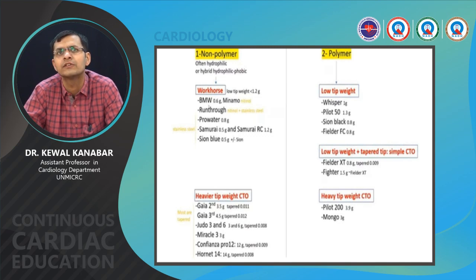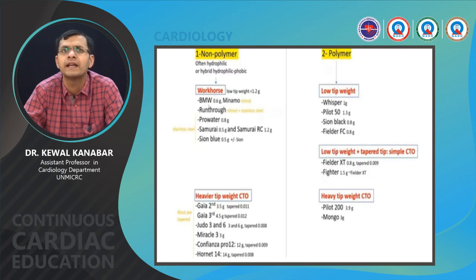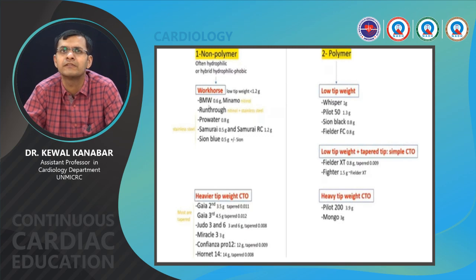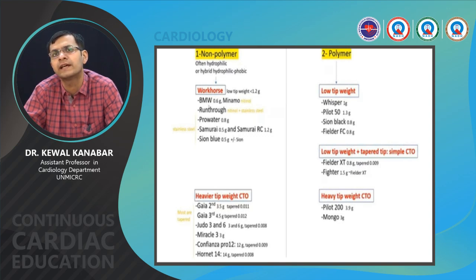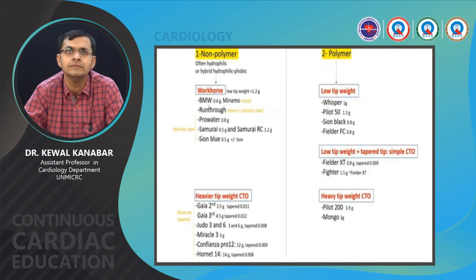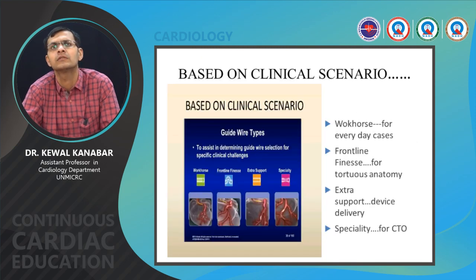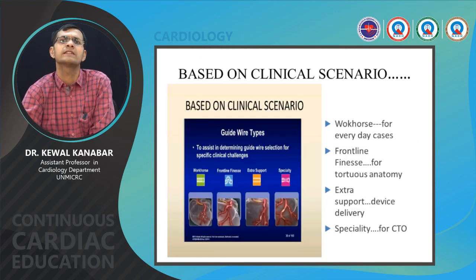Polymer wires include three series: the Pilot 50, Pilot 150; the Fielder series including Fielder, Fielder FC, Fielder XT, Fielder XTR, and Fielder XTA; and the Whisper group of wires. Among these, low tip weight wires are Whisper regular, Pilot 50, Sion Black, and Fielder FC. Intermediate tip load wires are Fielder XTA; heavy tip load CTO wires are Pilot 200 and Gladius Mongo.